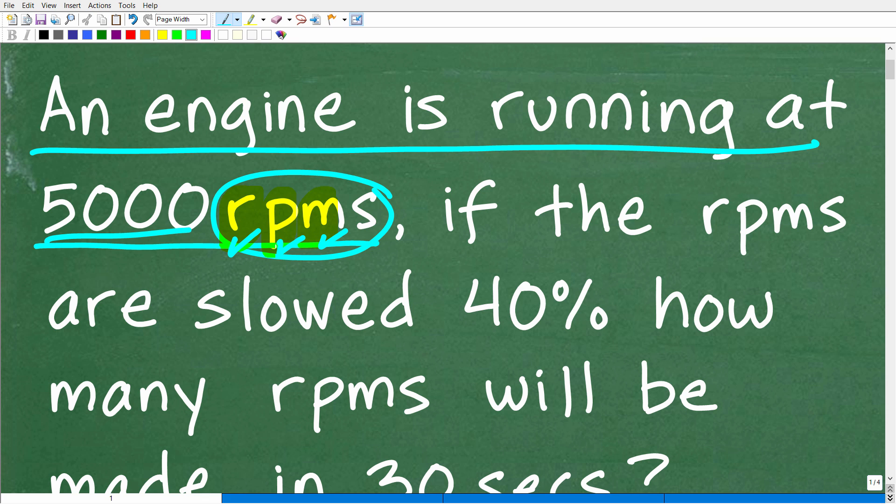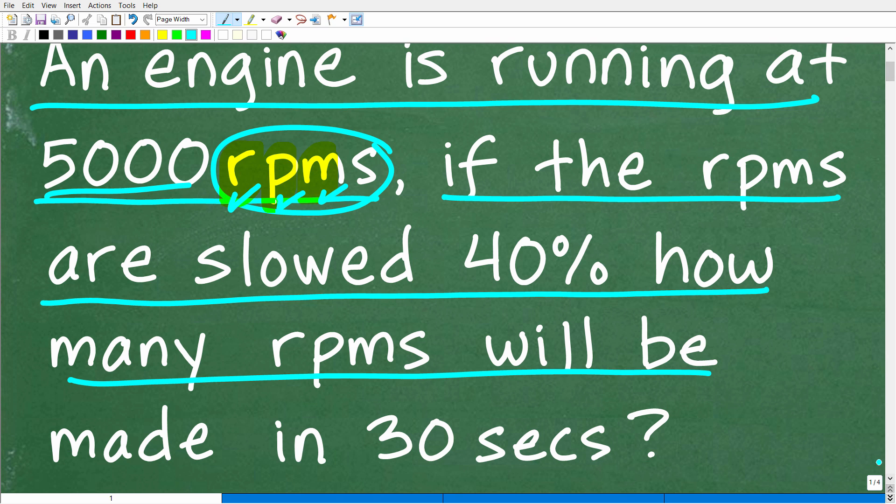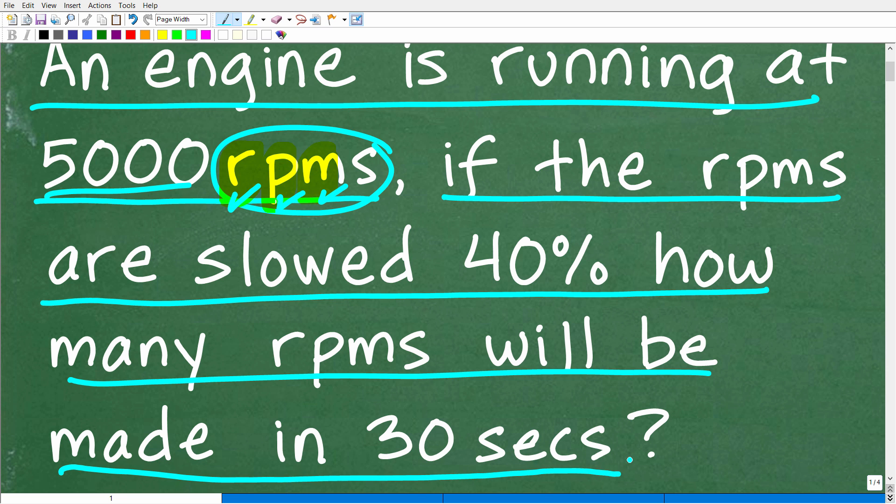Okay, so an engine is running at 5,000 RPMs. If the RPMs of this engine are slowed 40%, how many RPMs will be made in 30 seconds? Okay, so that is the question.